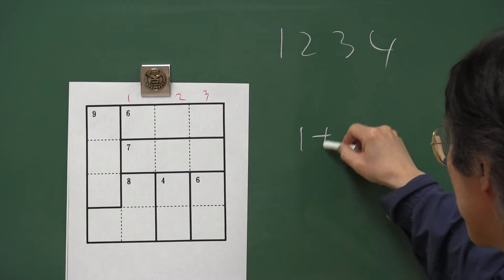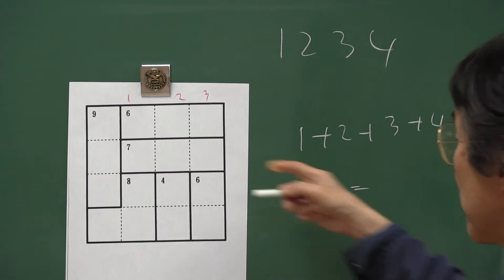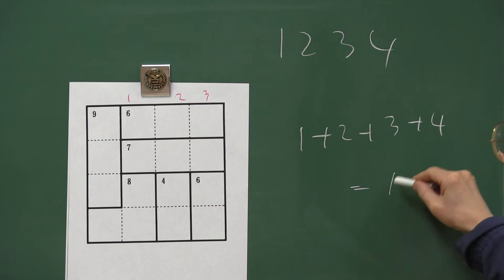And every row, every column has one, two, three, four once. Then sum of four numbers is always ten.